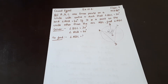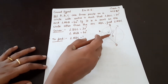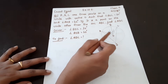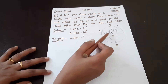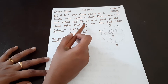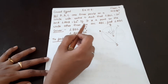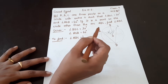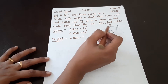In the next exercise 10.5, question number 1. A, B, C are 3 points on a circle with center O such that angle BOC is equal to 30 degrees and angle AOB is equal to 60 degrees. If D is a point on the circle other than the arc ABC, find the angle ADC.